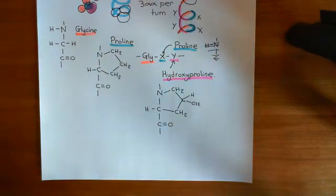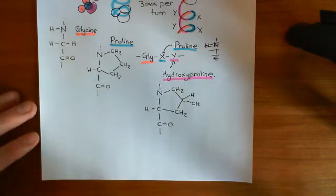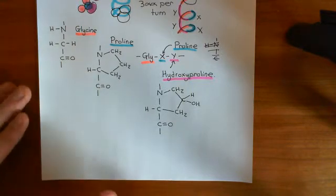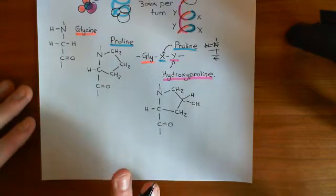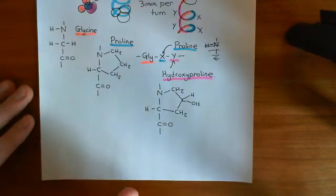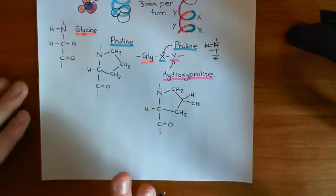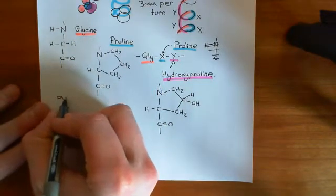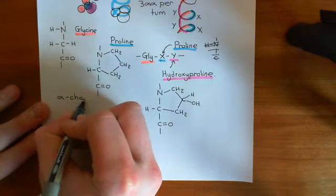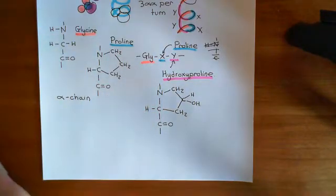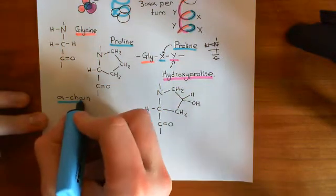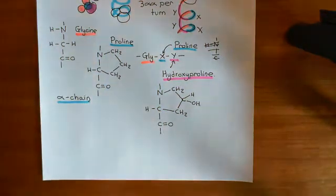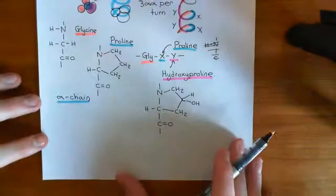I want to tell you what collagen type 4 is. We've looked at the structure of an individual collagen polypeptide, and we've discussed that there are 45 different genes which code for individual collagen polypeptides. A piece of terminology you should be aware of is that the individual polypeptide of a collagen molecule is known as an alpha chain. So these structures will be called collagen alpha chains.